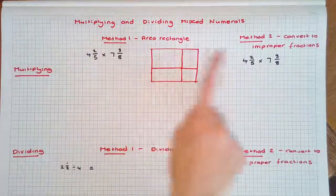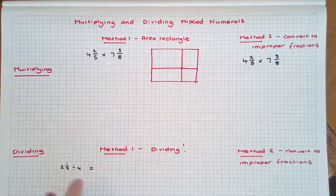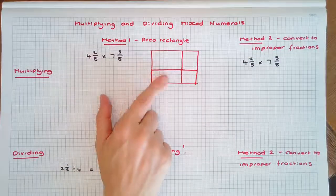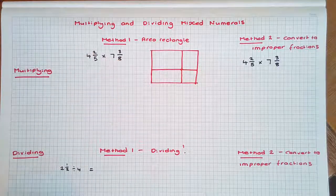In this video, we're going to look at two methods for multiplying mixed numerals and two methods for dividing mixed numerals. Method 1 uses a rectangle. Suppose we had 4 2/5 times 7 3/8.